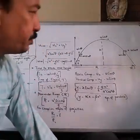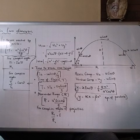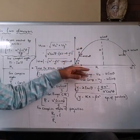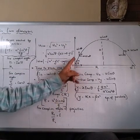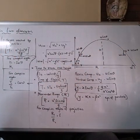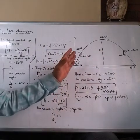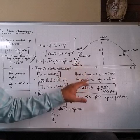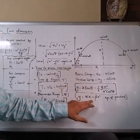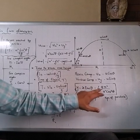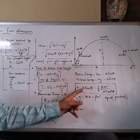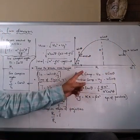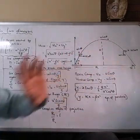Today we will talk about projectile motion. An object is projected making a certain angle theta with the horizontal, and this path which it follows is a parabolic path. On solving the equations we get the final equation of displacement as y = αx − βx². The final equation is x tan θ − (g x²)/(2u² cos² θ), which is the equation of a parabola. So the path of a projectile is said to be a parabolic path.